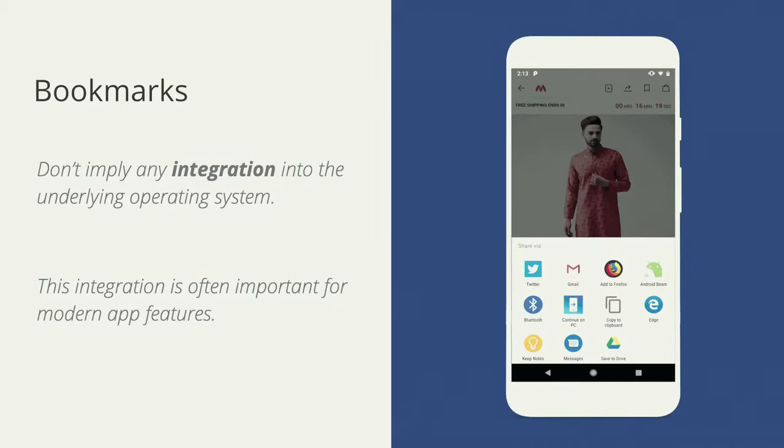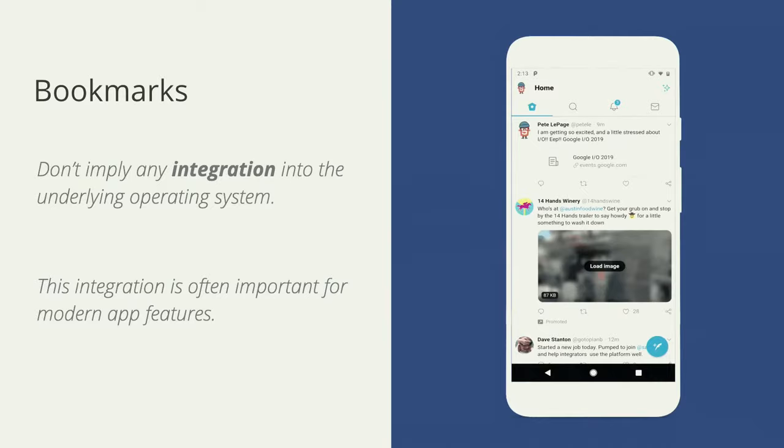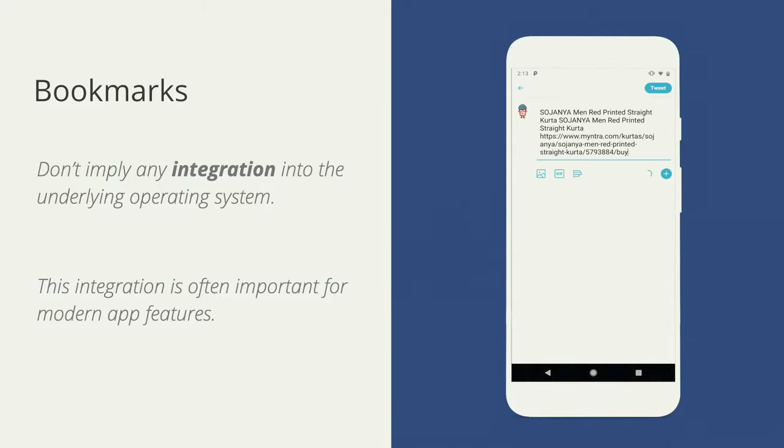Bookmarks in the past were the universal install button and have been available on every major device since the dawn of the web. So it's a good question to ask: what do we actually get out of install? What's better about it than just adding a bookmark? The main reason we need something more than bookmarks is that we need to integrate into the OS in ways that are pretty important to the functionality we're offering.